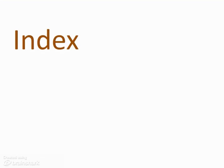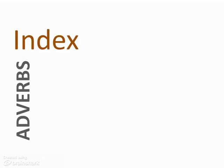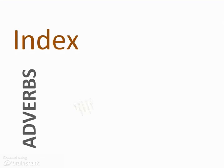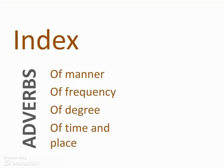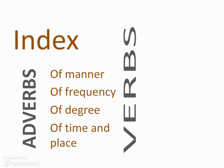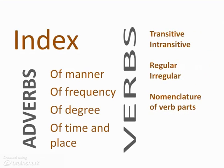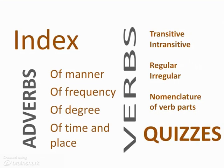In this session we're going to be looking at adverbs — adverbs come in lots of different shapes and sizes. We're going to look at adverbs of manner, of frequency, of degree, and of time and place. Then we're going to have a look at verbs — not so much verb tenses, that's in another video — but we're going to look at whether verbs are transitive or intransitive, regular or irregular, and the basic nomenclature of verb parts. All the way through there'll be short quizzes to test understanding, and once you've finished this video there's also another quiz on the Moodle site that you can try.